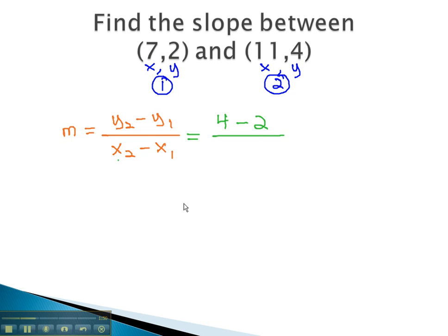Over x2, the x value from the second point, which is 11. Minus x1, or the x value from the first point, which is 7.